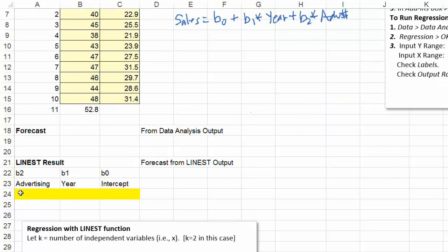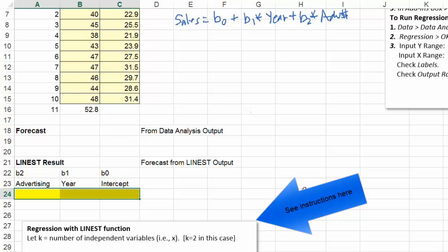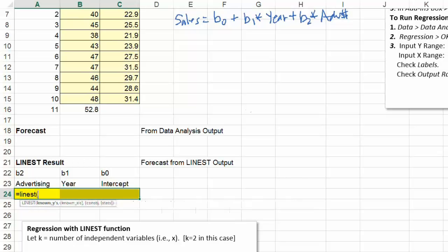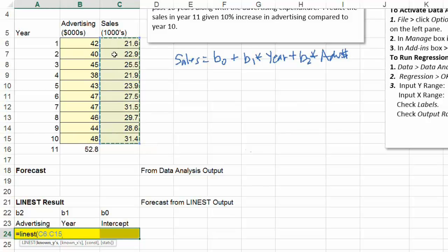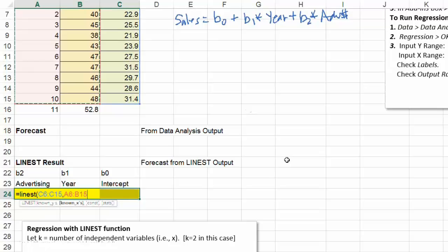So what we're going to do is, we're going to go over here, highlight these three cells. Select the three cells. Now you want to type equal LINEST, and then it says y values followed by the x values. Sales, that's the first one. That's your y values, and then comma. And now there are two x variables, like x1, x2. So I'm going to select both of the columns at the same time. So that goes from A6 through B15. So select both of the columns, and then close the parentheses.